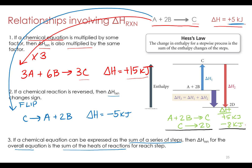When adding chemical equations, if something is on the same side in both equations, we add those together. If a molecule appears on both sides of the combined equation, those cancel each other out — if we make one mole of C and then use up one mole of C in the next step, we have no C left over. So A plus 2B are the only reactants, and 2D is the only product, giving an overall delta H of plus 5 plus negative 8, which equals negative 3 kilojoules.